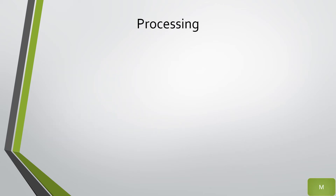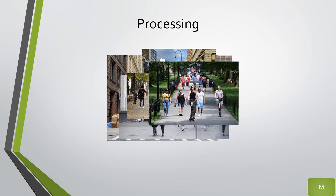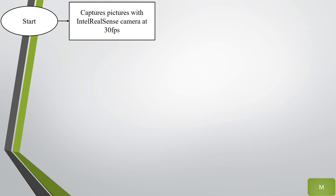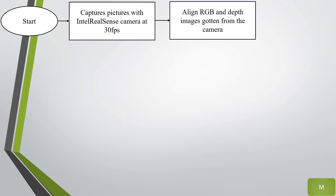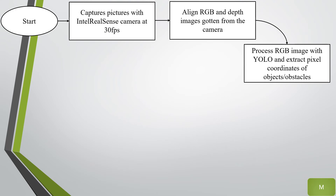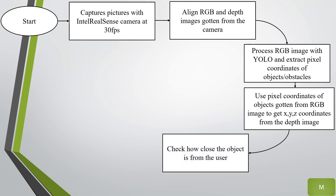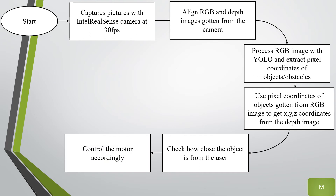The image generated by the depth camera is sent to the NVIDIA Jetson Nano for analysis. The Jetson Nano performs object detection, controls the outputs, and handles all necessary computations. The workflow is as follows: first, depth and RGB images are captured and aligned; next, YOLO extracts objects and their pixel coordinates; using the RealSense SDK, XYZ coordinates of objects are captured and checked for proximity to the user; depending on distance, the output modes are controlled accordingly, and this loop continues until the device is turned off.